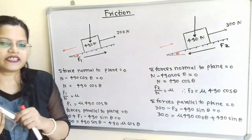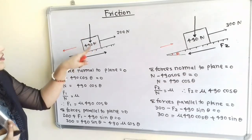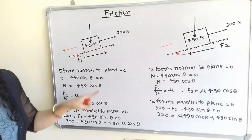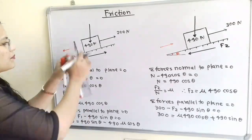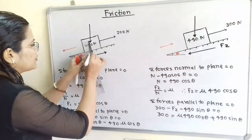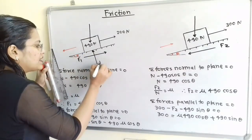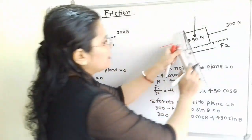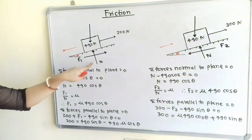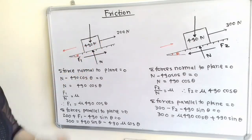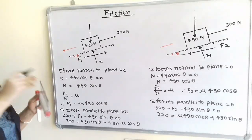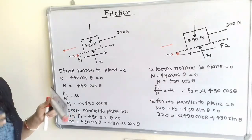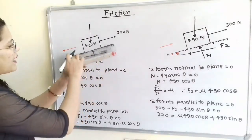There is a normal reaction N because the block rests on the inclined surface. This normal reaction N is always perpendicular to the surface and directed towards the block, passing through the center of the block. The same normal reaction N is shown for both diagrams. Now we resolve the weight of 490 N into two components: one component parallel to the inclined plane and the other perpendicular to the inclined plane.